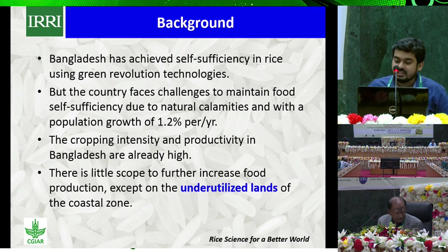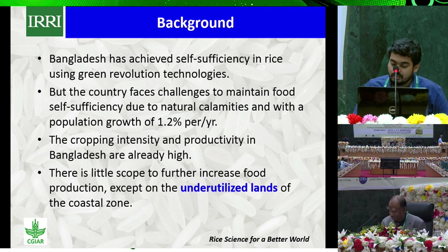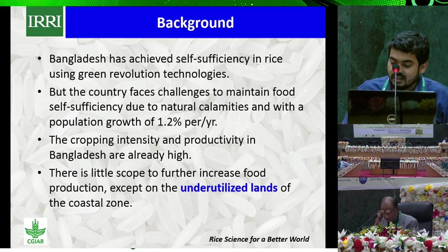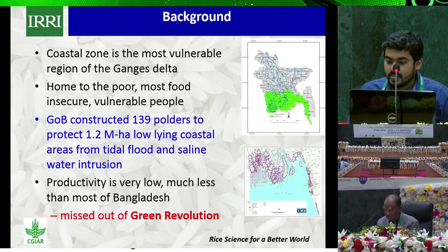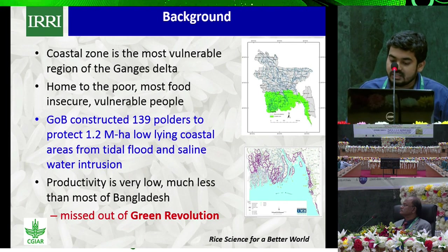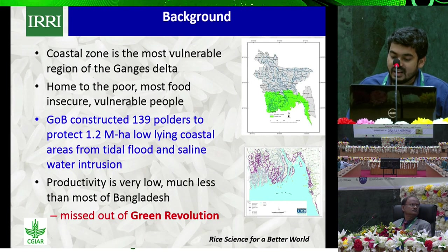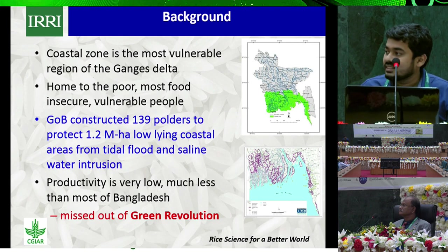Bangladesh has achieved self-sufficiency in rice using green revolution technology, but the country faces challenges to maintain food self-sufficiency due to natural disasters and population growth of 1.2% per year. Cropping intensity and productivity are already high, with little scope to further increase food production except in the unutilized land of the coastal zone. The coastal zone is the most vulnerable region of the Ganges delta. The government has already constructed 138 polders to protect 1.2 million hectares of low-lying coastal area from tidal floods, saline water intrusion, and storm surges, but productivity is very low here.